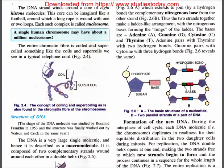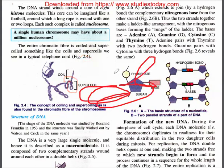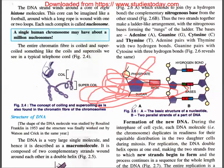Just to give a brief idea of how it looks: a coil goes like this, and a supercoil is this — layered coiling on top. That's how you can visualize it. With that, we're done with the structure of chromosomes.